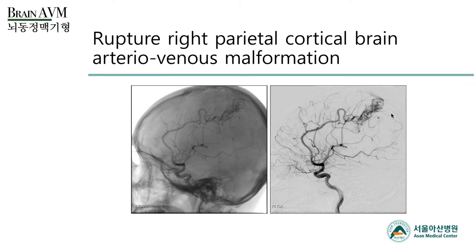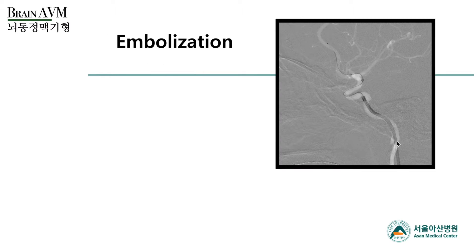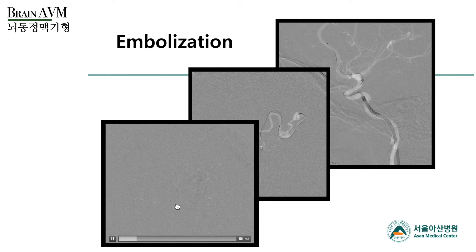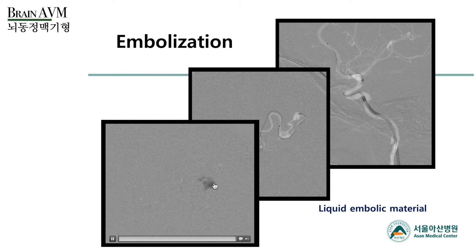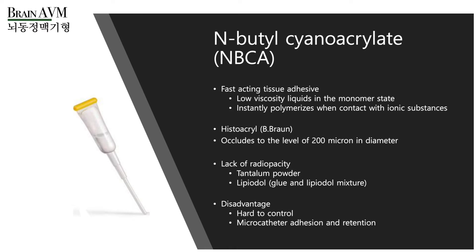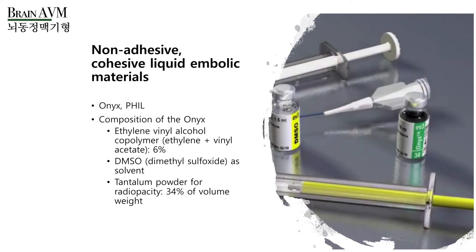We performed the angiography and identified the AVM nidus. We placed the guiding catheter up to the cavernous ICA and placed an intermediate catheter into the MCA. Within the intermediate catheter, we navigated the microcatheter through the feeding artery deep into the AVM nidus. Then liquid embolic material was injected very slowly — you can see opacification of the nidus with the embolic material — and we continued injection until we occluded the whole nidus. The final embolization result showed complete disappearance of the nidus. Embolic materials used include N-butyl cyanoacrylate (glue), or non-adhesive cohesive liquid embolic materials such as Onyx or Phil.